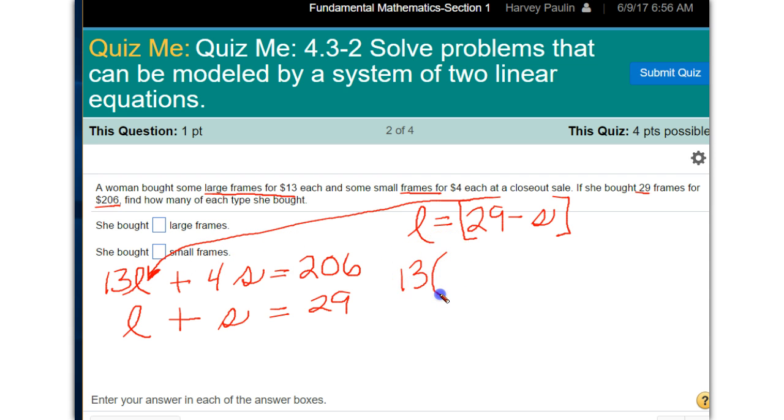13 times 29 minus S in parentheses, because that's the sum, plus 4S equals 206. Now you have an equation with only one kind of letter. You've substituted into the other equation, and we'll let you work on this.